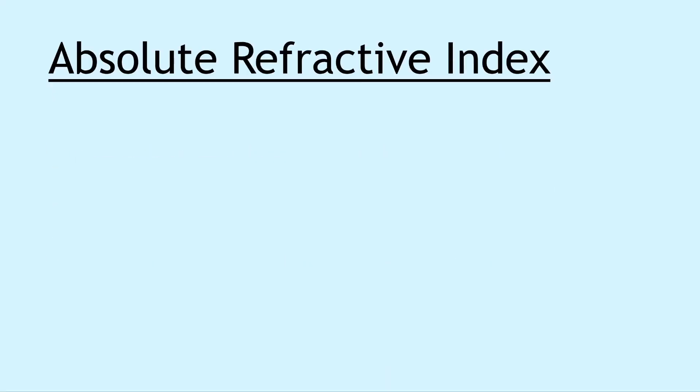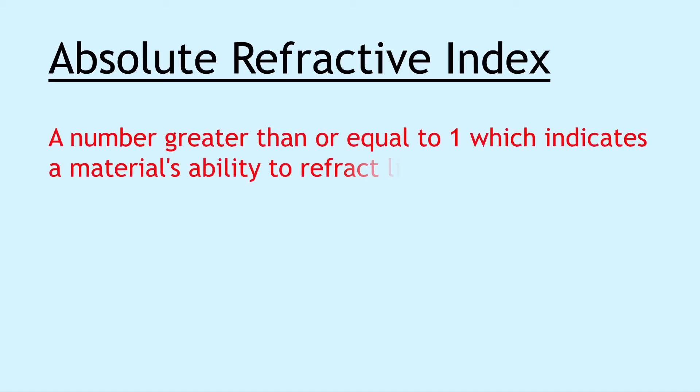Next we have absolute refractive index or sometimes just shortened to refractive index, which is a number greater than or equal to one which indicates a material's ability to refract light. The maximum number that exists for absolute refractive index is for that of diamond, which is at 2.43.